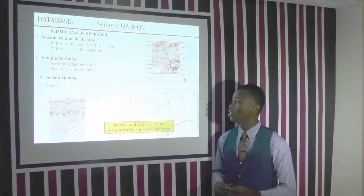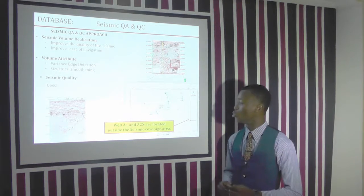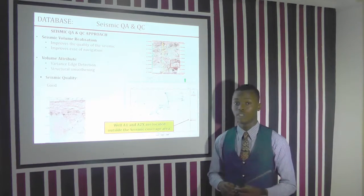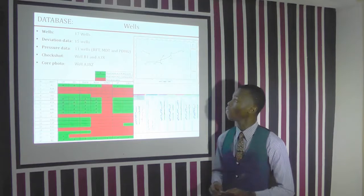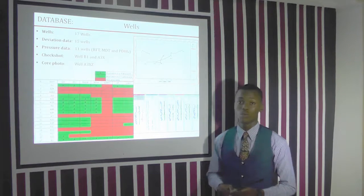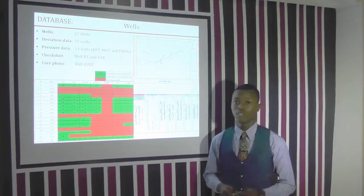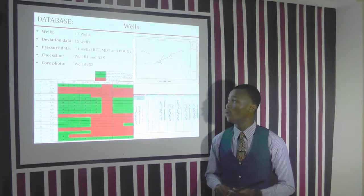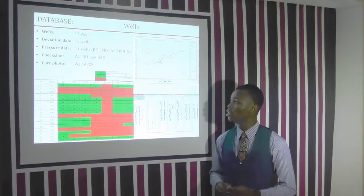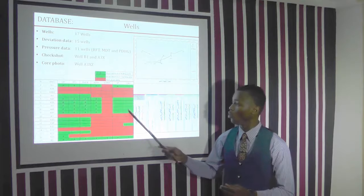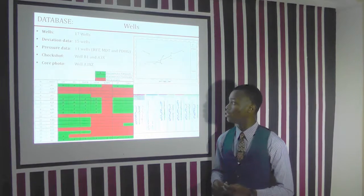The seismic quality was very good. We also discovered that wells A1 and A2X were located outside the seismic coverage after depth conversion, and therefore we did not integrate the two wells into our velocity model. We were given 17 wells, of which 15 wells had wireline data and 11 wells had petrophysical data. Core photographs were provided for only one well, well A3XA.